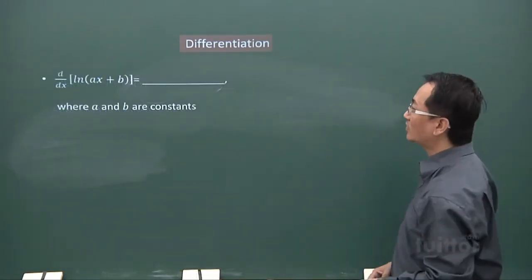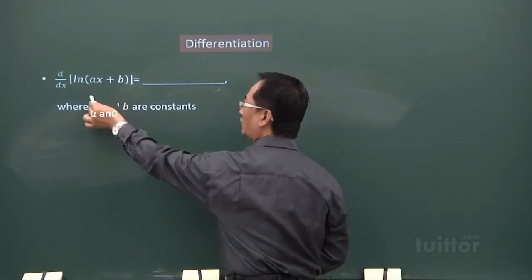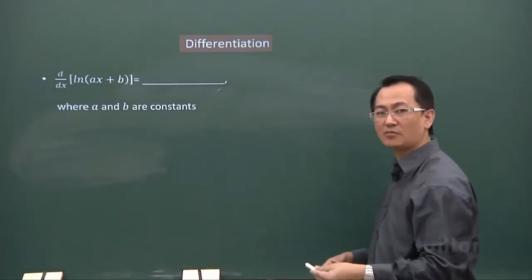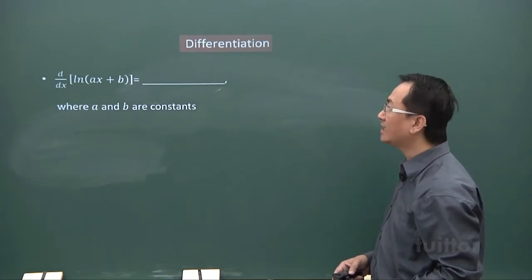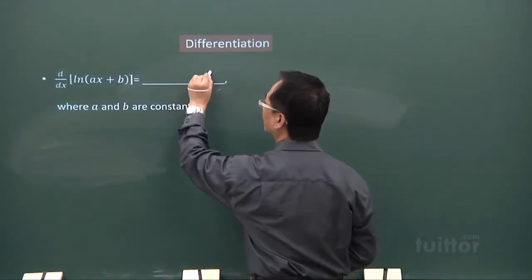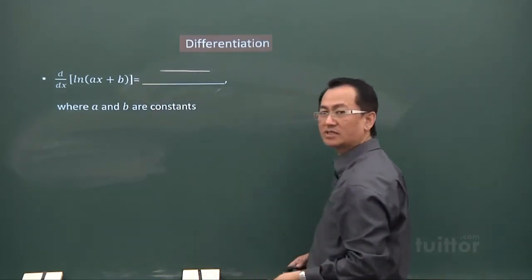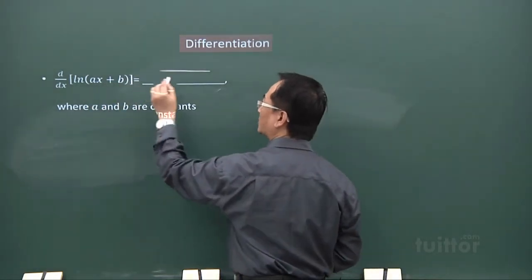Another case we look at. Still similar. Instead of u, instead of f(x), we give it some linear expression, ax plus b. So, what we'll do? Again, a line across in the denominator place, you put in ax plus b.